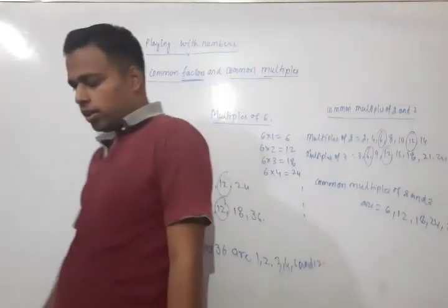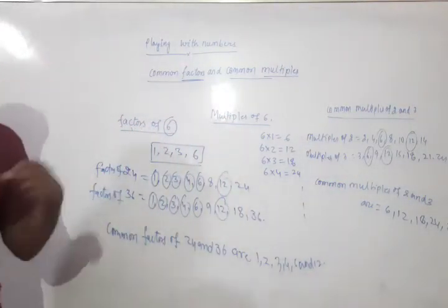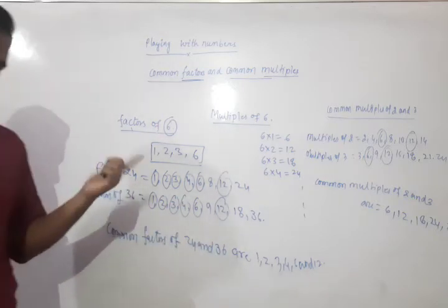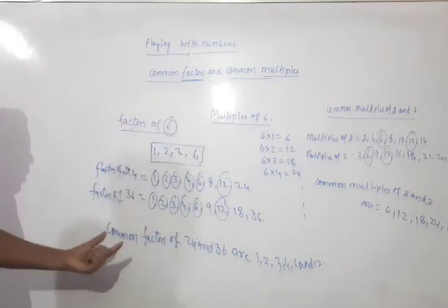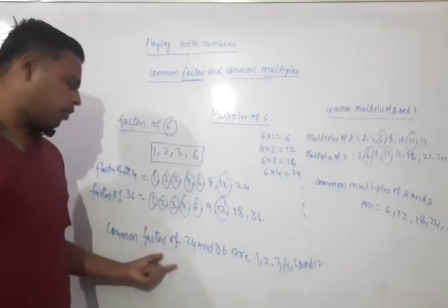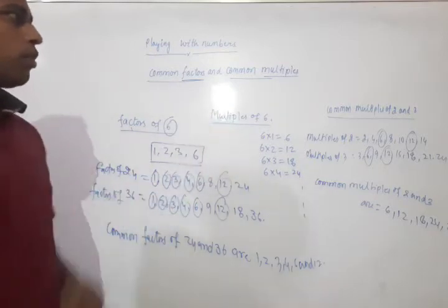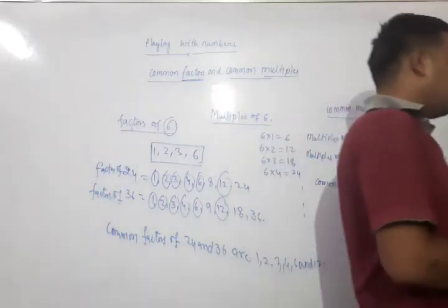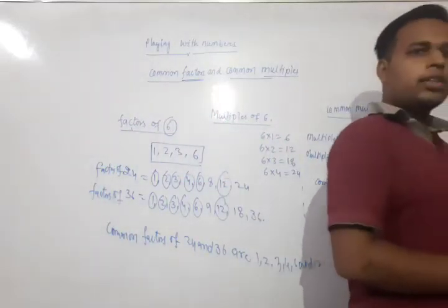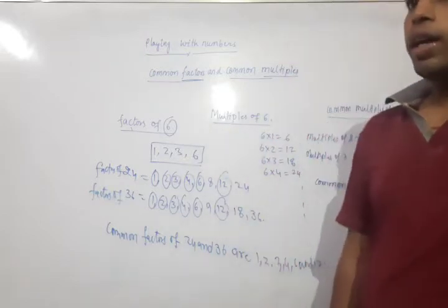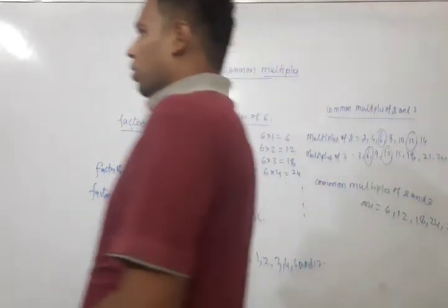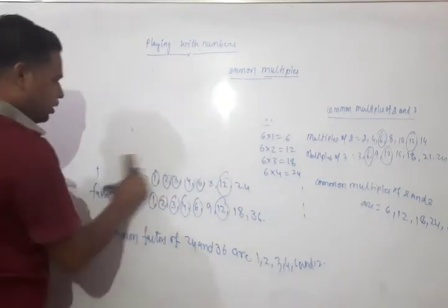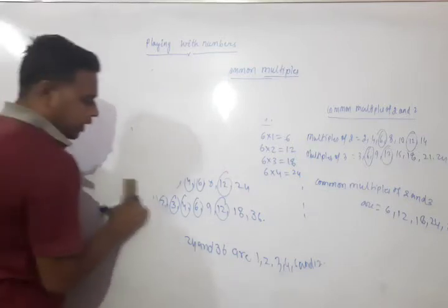So, what we have seen in multiples and factors: the number of factors is fixed, but the number of multiples is not fixed. So in the case of common factors and common multiples, the number of common factors will be fixed, and the number of common multiples will not be fixed. For two numbers which share no common divisor, the common factor will be 1, because 1 is the factor of each and every number.